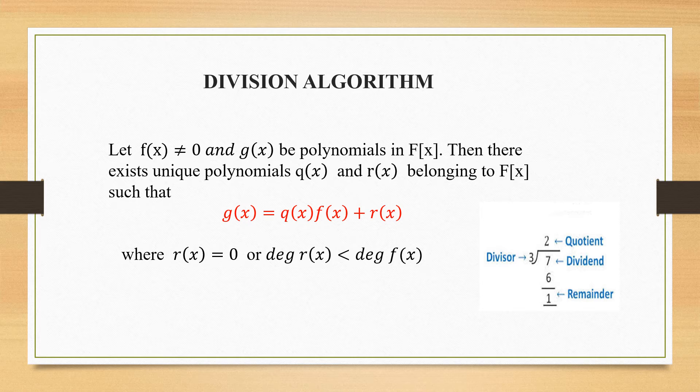So how I have named it: the answer after subtracting is called the remainder, and the one which is on top, how many times, that is the quotient. The number which is dividing is called the divisor, and the number which is being divided is called the dividend.